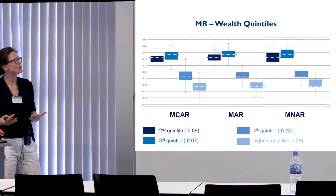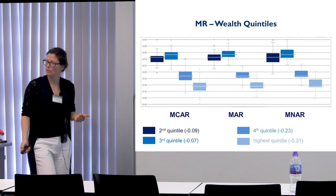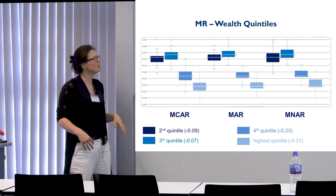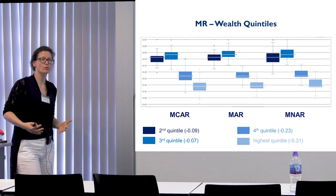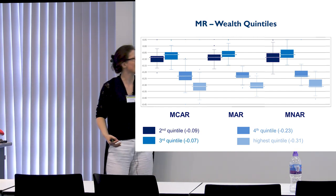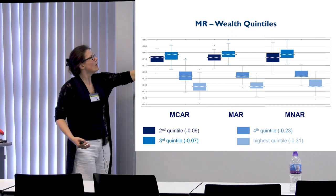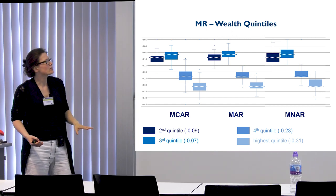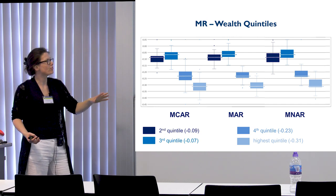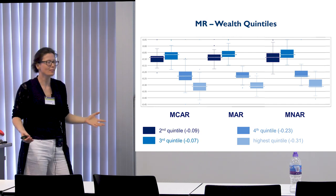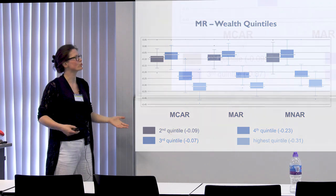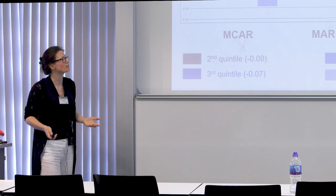We had very high hopes for multiple imputation to eliminate most of the bias introduced by MAR and MNAR. It produces rather nice results, but it's not very different from the other approaches. There doesn't seem to be much advantage of using multiple imputation over the simpler methods.